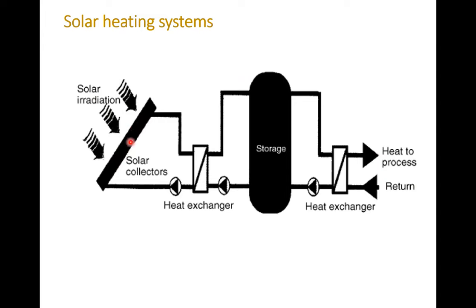Inside this solar collector, there is some kind of fluid — either water, air, or maybe other fluids like alcohol. But most likely water is the common one. The water, of course, has some issues during the winter time. It may also have some kind of antifreeze chemical to prevent it from getting frozen and affecting the pipes of the system. So again, this is the solar radiation heating up the fluid.